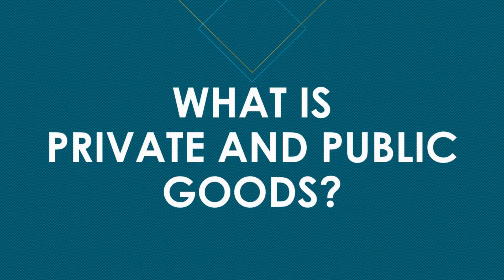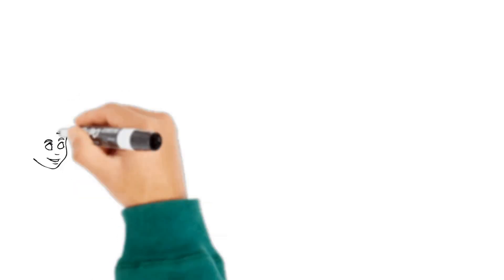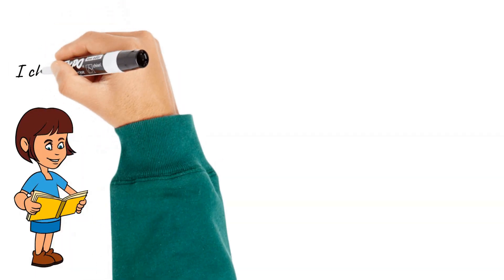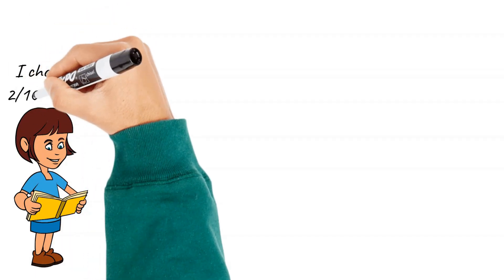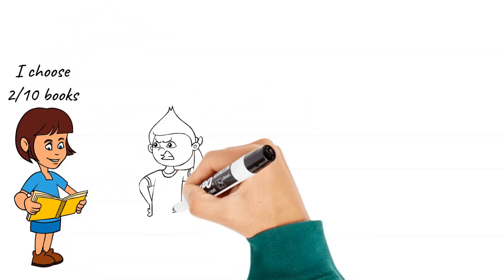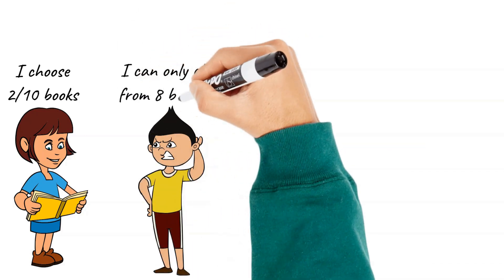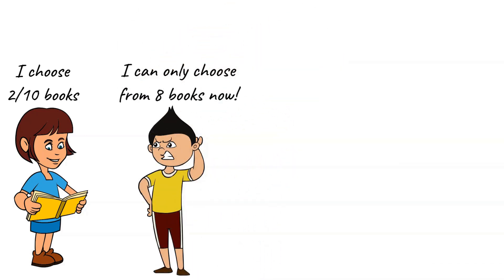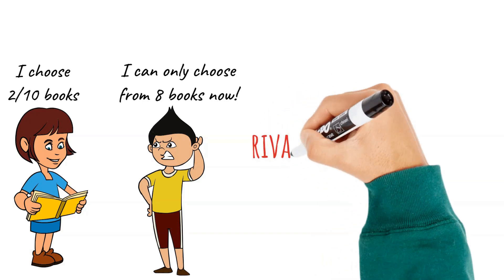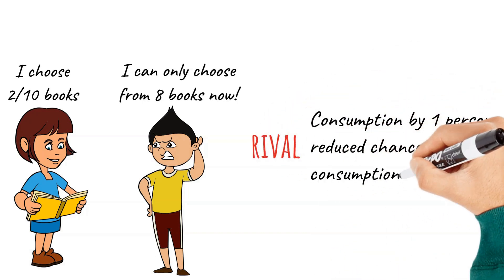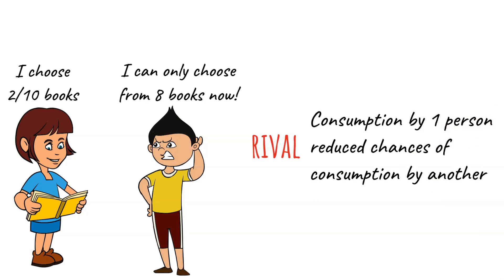Firstly, let's know what public and private goods are. Say you go to a shop and you buy a notebook. Out of 10, you buy 2 notebooks. So the next person who wants to buy the books will only have 8 books to choose from. This means the good is rival — consumption of the product by one person reduces the chances of consumption of the product by another person.